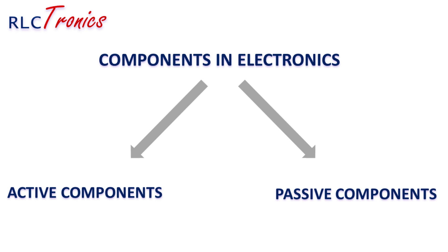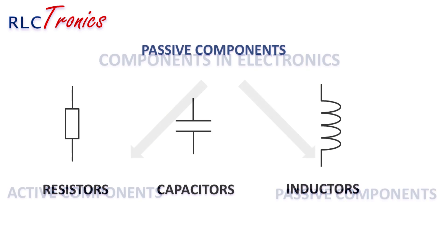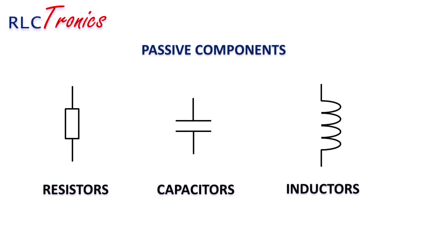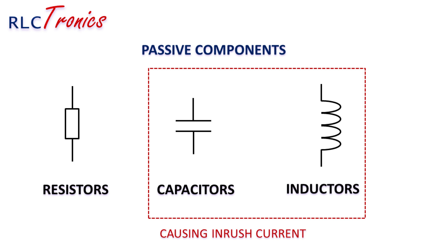There are two big families of components in electronics: the active components and the passive components. In the passive components family, we find the resistors, the capacitors, and the inductors. Inductors and capacitors have the ability of storing energy, which results in a high surge current when you first apply a voltage to a circuit containing those components.